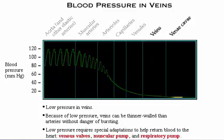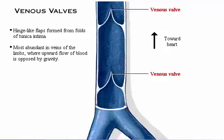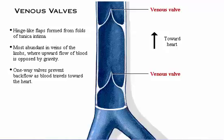Venous valves are hinge-like flaps formed from folds of the tunica intima. Venous valves are most abundant in the veins of the limbs where the upward flow of blood is opposed by gravity. The one-way venous valves prevent backflow as blood travels toward the heart. Click on a valve to see the direction of blood flow.